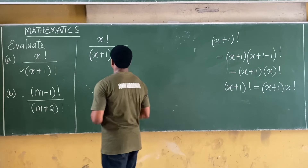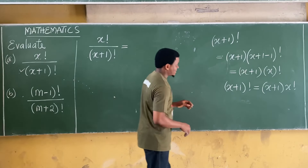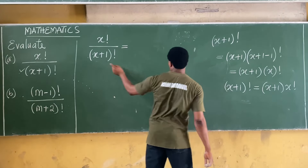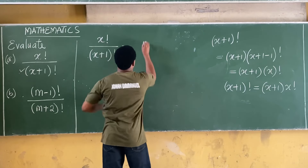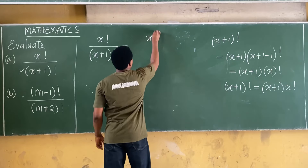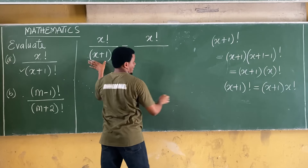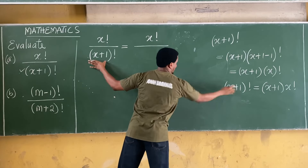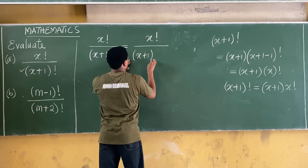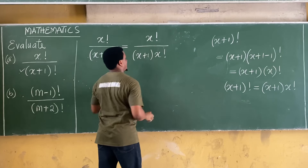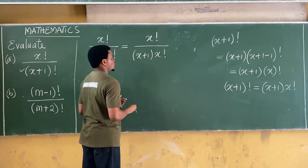Now substituting back, the original expression becomes x! over (x+1)·x!. We have expressed the denominator in terms of the numerator.